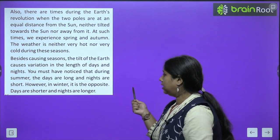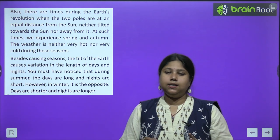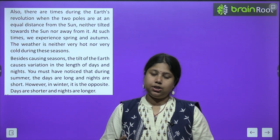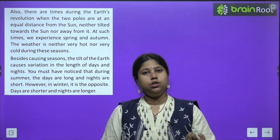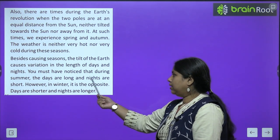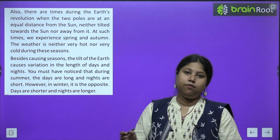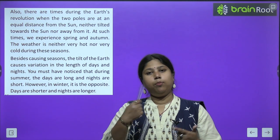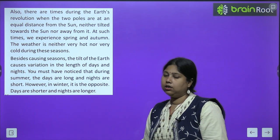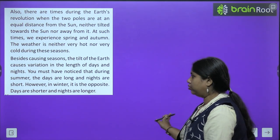Besides causing seasons, the tilt of earth causes variation in the length of days and nights also. Yeh jo axis par jo jhukav hai earth ka, iski wajah se din aur raat ke division mein bhi variation aata hai — kabhi jo din hain wo bade hote hain aur kabhi din chhote hote hain. You must have noticed that during summer, days are longer and nights are short. However in winter it is opposite — days are shorter and nights are longer, kyunki jaldi andhera ho jaata hai.